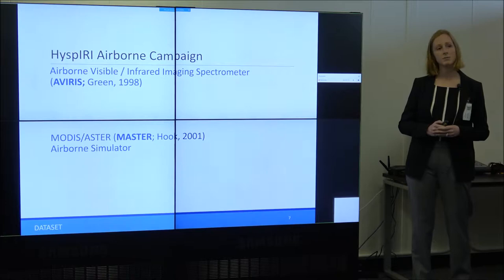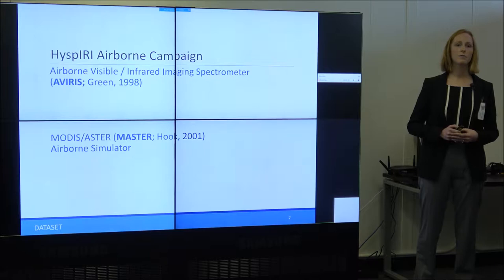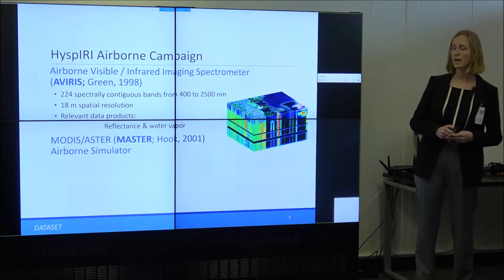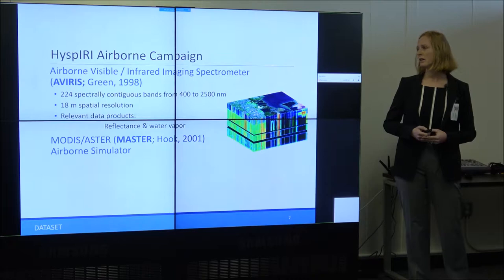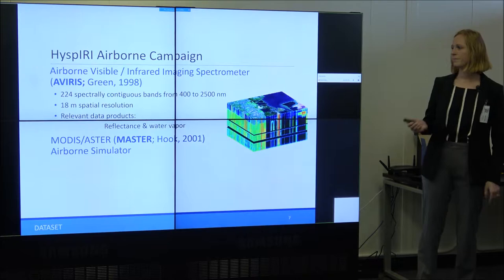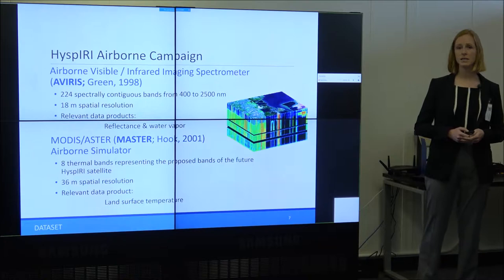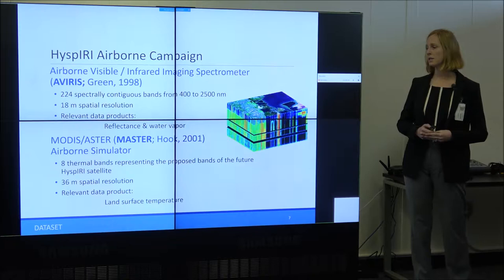The data I'm using is from the HyspIRI Airborne Campaign, a NASA flight campaign flown around California from 2013 to 2017. It flies two sensors, AVIRIS and MASTER, to look at the scientific potential of having paired hyperspectral and thermal imagery together. AVIRIS has 224 spectrally contiguous bands from the visible through the shortwave infrared at an 18-meter spatial resolution; I'm using the reflectance imagery and the water vapor imagery. MASTER has eight thermal bands representing the proposed bands of a future HyspIRI satellite, flagged for development in the recent NASA decadal survey, at a 36-meter spatial resolution; I'm using the land surface temperature product.